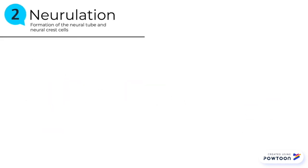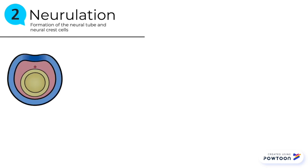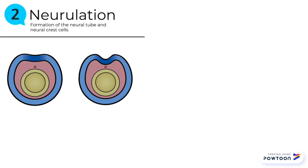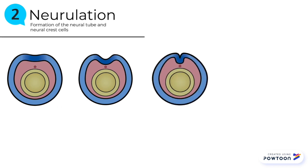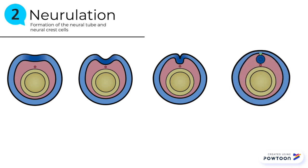Neurulation is the next step in the process. Neurulation is the formation of the neural tube and neural crest cells. Ectodermal tissue thickens and flattens to become the neural plate, separating the neural plate from the ectoderm. This is seen in the picture as the dark blue in the ectodermal tissue. Cuboidal epithelial cells then begin to lengthen and narrow, causing the folds to occur. Neural folds form as parallel ridges along the embryo. The neural folds meet at the midline to form the neural tube, and neural crest cells separate from the neural folds.